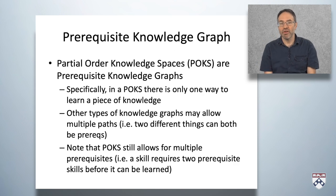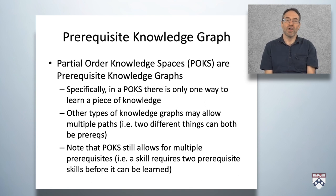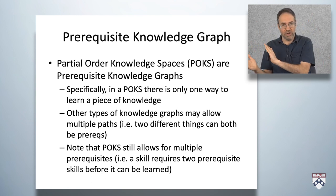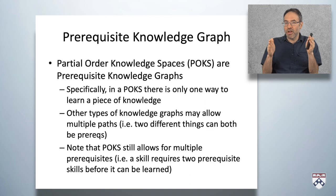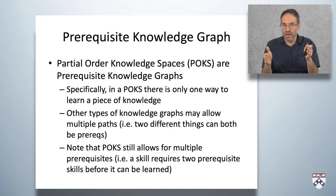One type of prerequisite knowledge graph are partial order knowledge spaces, or POCs. In a POC, there's only one way to learn a piece of knowledge. Other types of knowledge graphs might allow multiple paths — you might be able to know X or Y to learn Z. POCs still allows for multiple prerequisites, but they're AND relationships. In POCs, you might say that skill Z requires X and Y, but not X or Y.